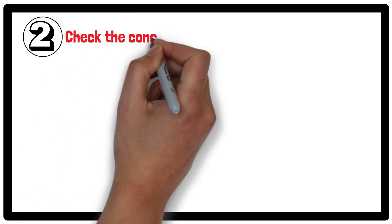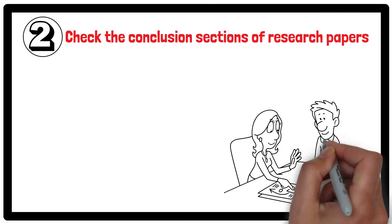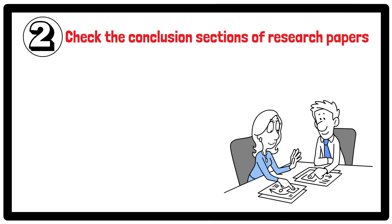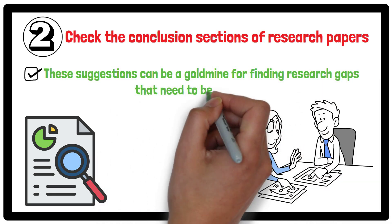Secondly, check the conclusion sections of research papers. Authors often suggest areas for future research that they were unable to cover. These suggestions can be a goldmine for finding research gaps that need to be addressed.